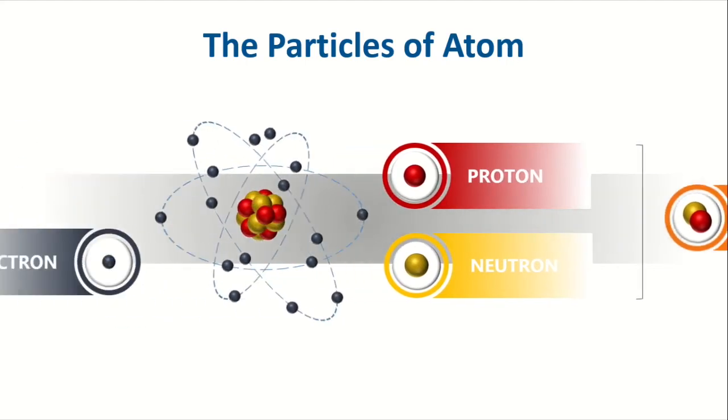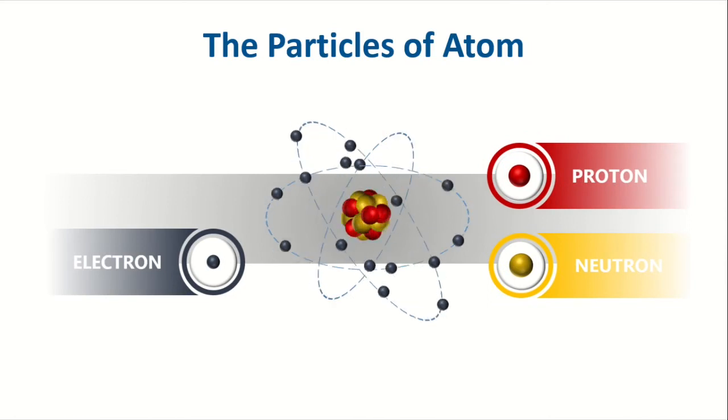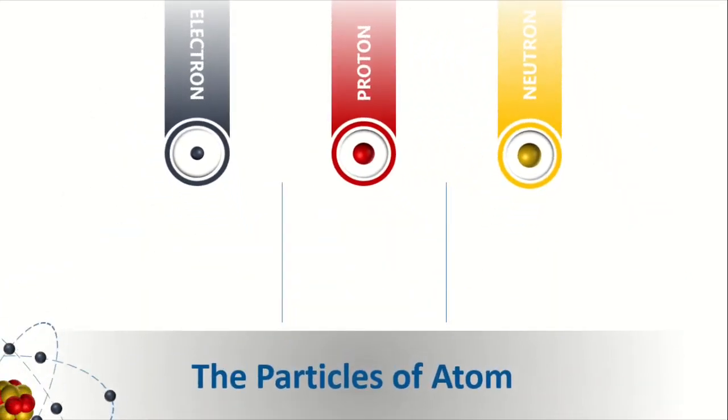Let us again review what we have already learned about an atom. Atom is composed of three subatomic particles: electrons, protons, and neutrons.